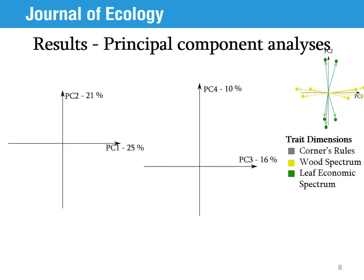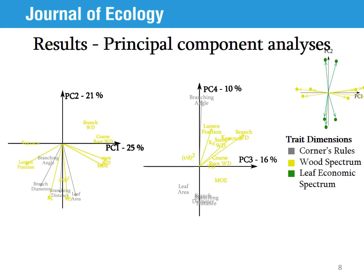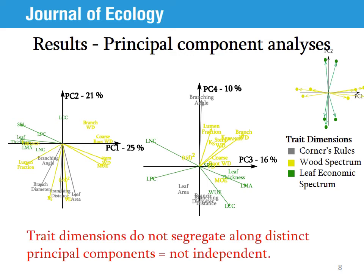In terms of the principal component analysis, first notice that we have four significant principal components, which explain similar fractions of the total variation. This means our multivariate trait space is fairly round and not dominated by one or two principal components. The wood spectrum traits do not cluster along any principal component — they are spread across the biplots. The traits from Corner's Rule do cluster along principal component 2, but they are also correlated with wood spectrum traits. For the leaf economic spectrum, two of seven traits align with PC1 along with two wood spectrum traits, and four of seven traits are somewhat grouped along PC3. In summary, trait dimensions do not segregate along different principal components, suggesting they are not independent.